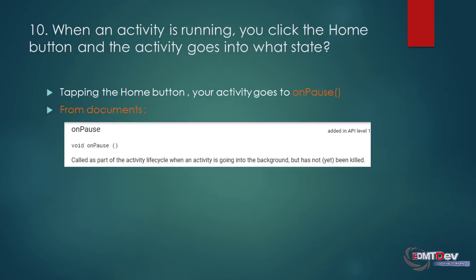Question: When an activity is running and you click the home button, the activity goes into what state? Tapping the home button, your activity goes to the unpaused state.